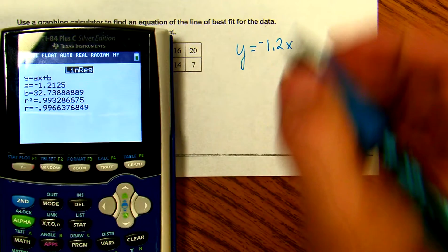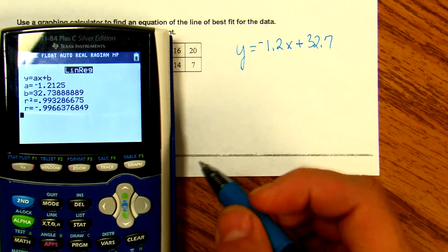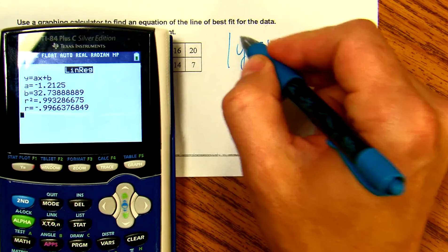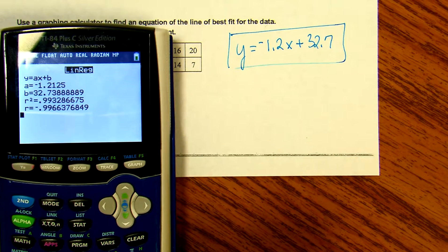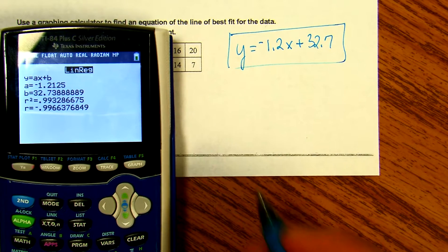Based on the data given, according to this calculation, that's our equation. The r value is negative 0.997, and this is very close to negative one.